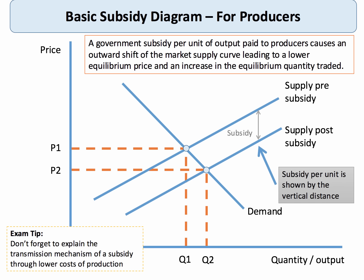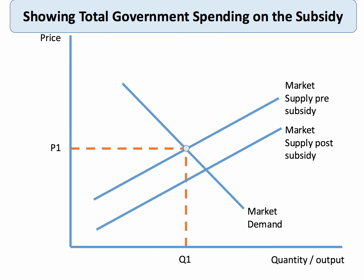In the exam it's important to work through what's called the transmission mechanism — explaining to the examiner how a subsidy eventually feeds its way through to a lower price for the consumer.